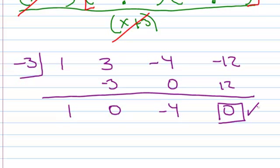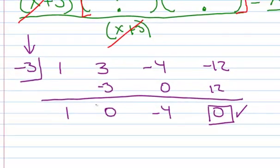That's a really key piece. If you get 0 as a remainder, that means that this is a factor or it is a zero. So you always want to make sure you get 0 as a remainder.